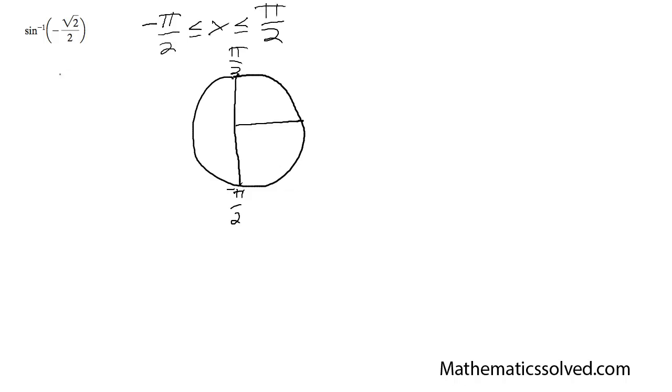Alright, so this is the same thing. You can rewrite this as sine of x is equal to negative root 2 over 2. This is also the same thing.